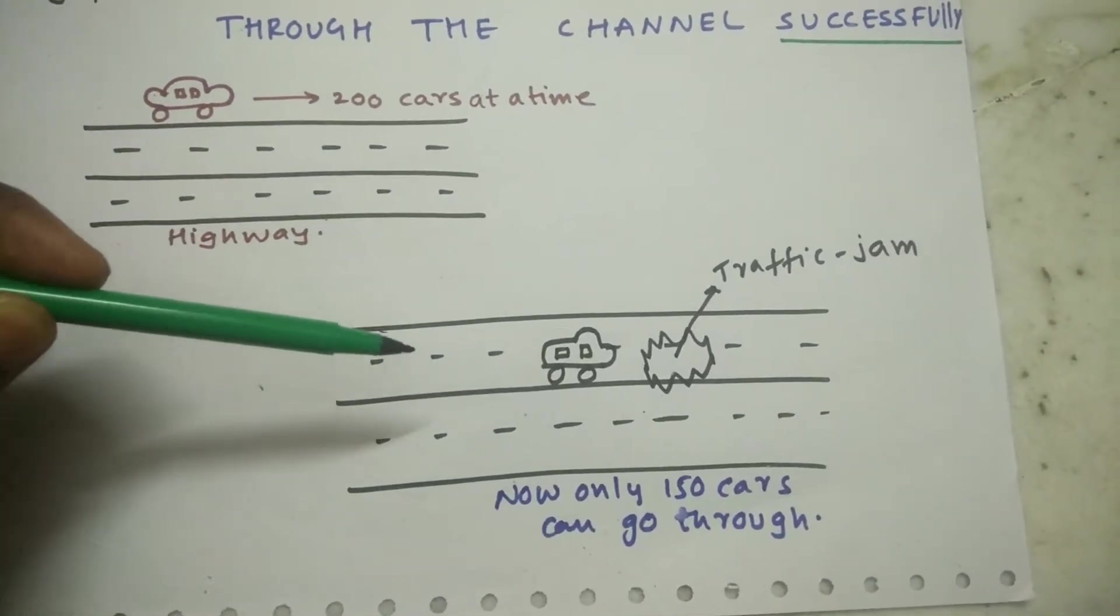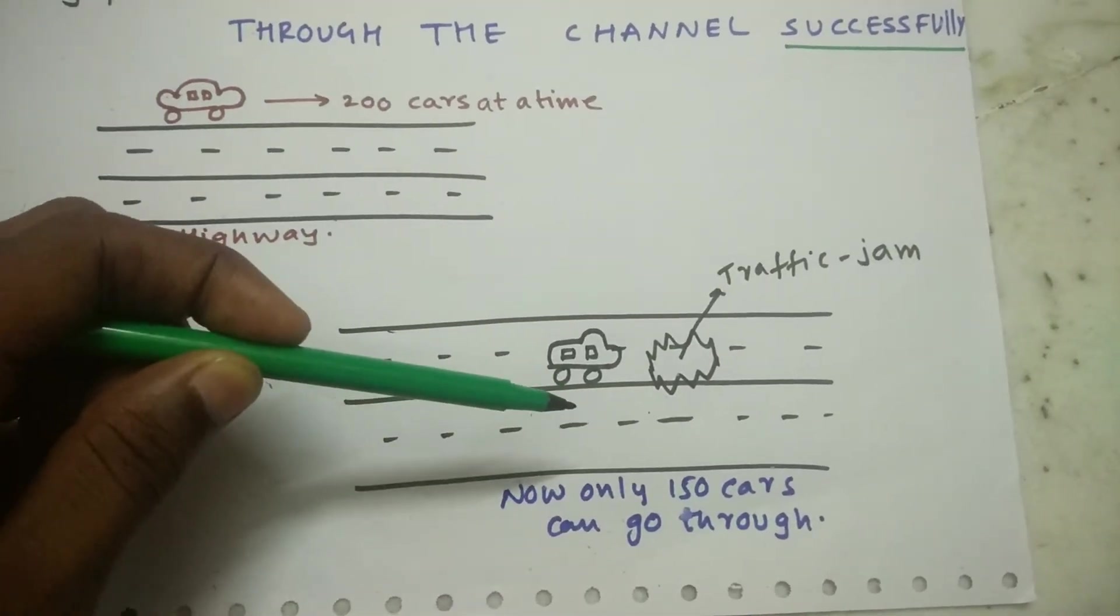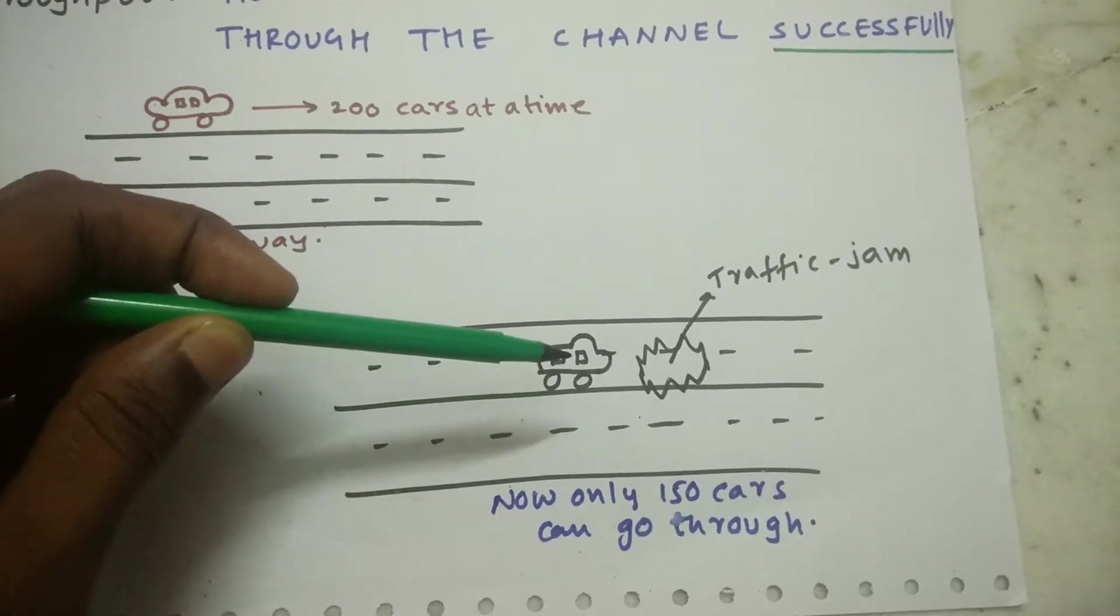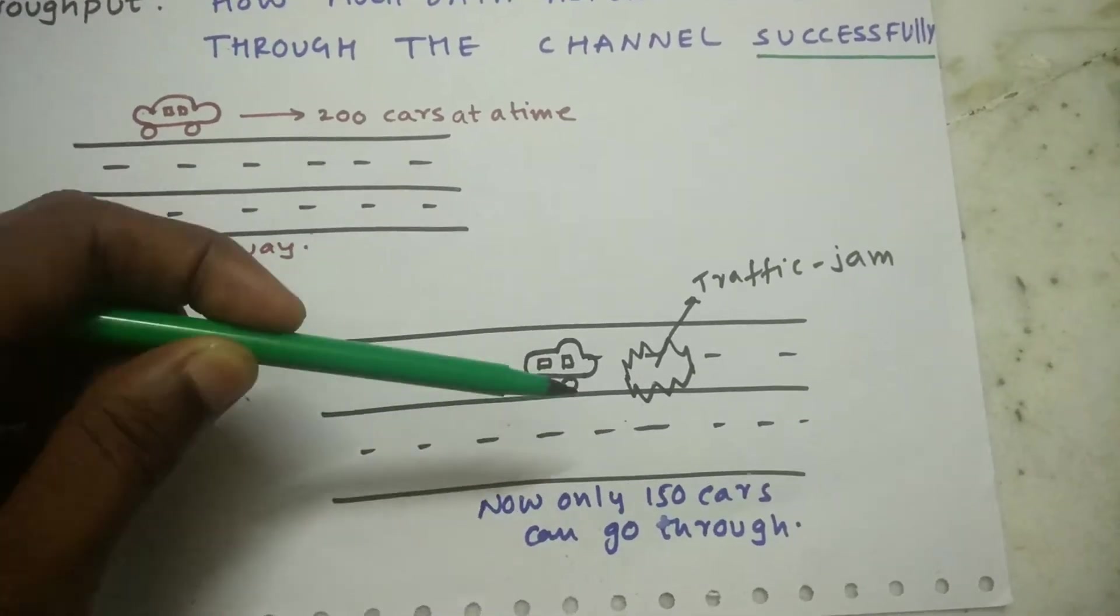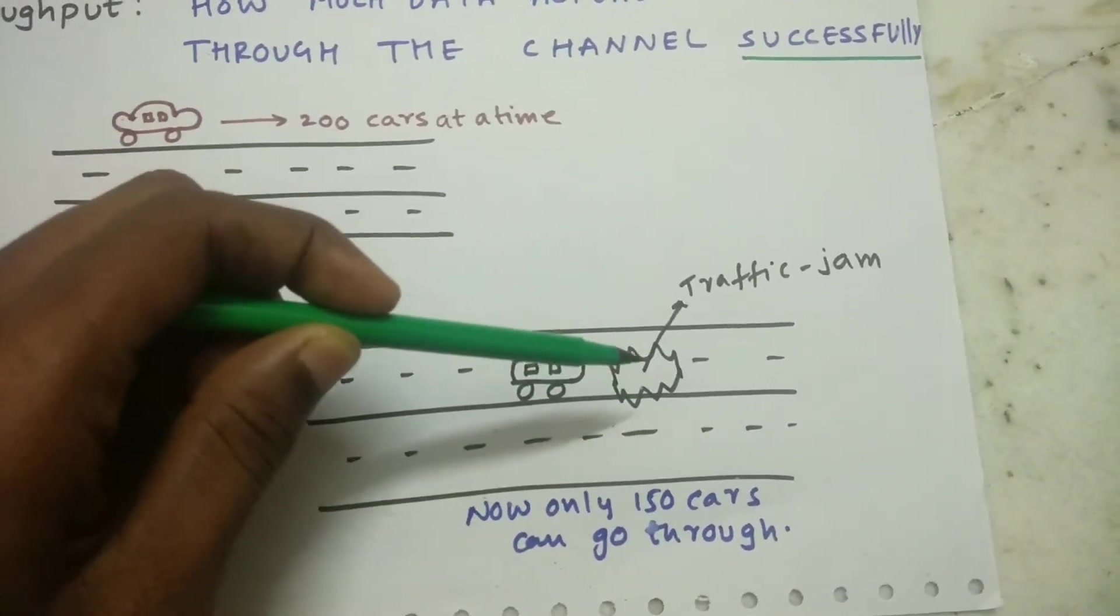Now due to the potholes, only 150 cars can go through this highway. So what happened is that the number of cars have reduced on this highway due to some traffic jam that is caused by potholes.